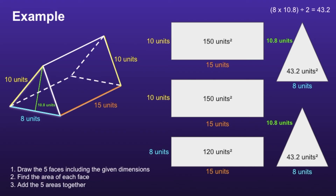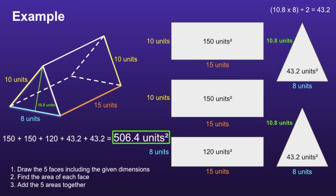This moves us on to the final step: add the five areas together. 150 plus 150 plus 120 plus 43.2 plus 43.2 gives us the final surface area of 506.4 units squared.